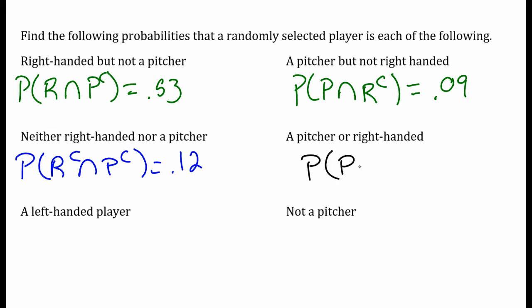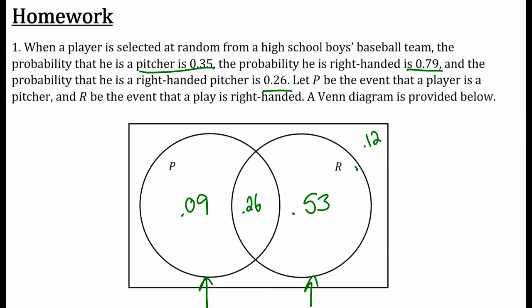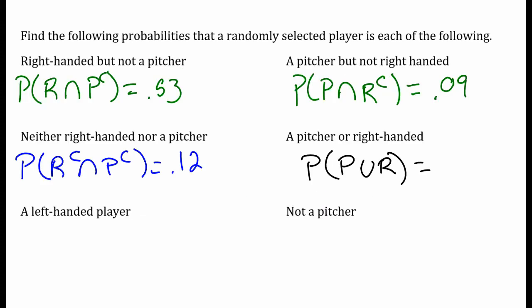What's the probability that I get a pitcher OR they're right-handed? So they just have to be at least one. So these guys are just pitchers, those guys are both, those guys are right-handed as well. So if I add those three probabilities together, which we already did, if you add those together you get 0.88. 88% of them are a pitcher or they're right-handed.